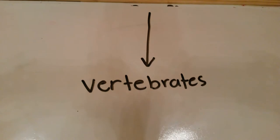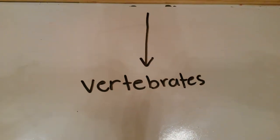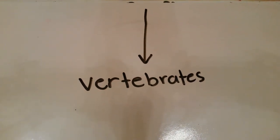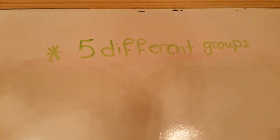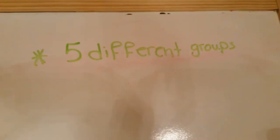So, the definition of vertebrates: they are the animals that have backbones. They are classified into five different groups.